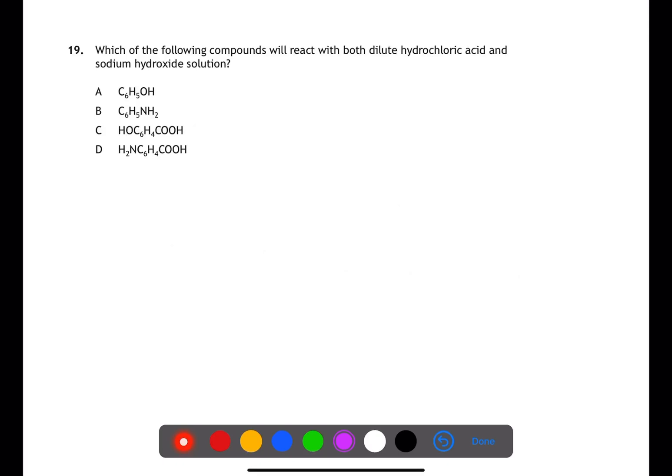In question 19, we're looking for a single compound which will react with both dilute hydrochloric acid and sodium hydroxide. For this to be the case, it will need to contain a basic group to react with hydrochloric acid, and it will need to contain an acidic group to react with sodium hydroxide. The first answer is phenol, which will be slightly acidic. This might react with the base, but it will not react with the acid. The second answer is an amine. This will react with an acid, but not a base.